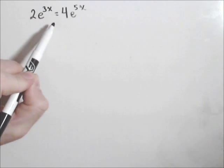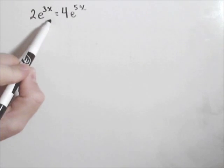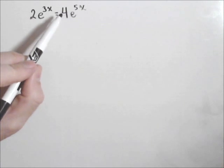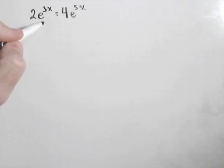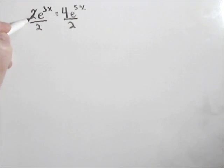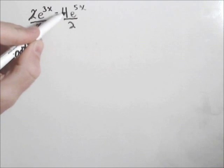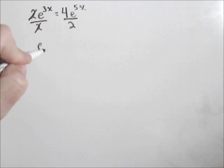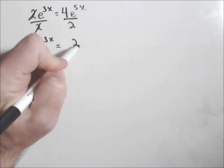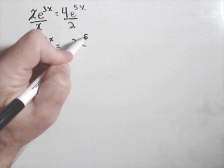Now typically when we have an exponential equation we want to isolate the exponential piece. When we have two of them we might not be able to isolate both of them. So what we'll do is isolate one of them by dividing by two, which is probably the easiest because it'll cancel those out and those will reduce. So we end up with e to the 3x equals 2e to the 5x.